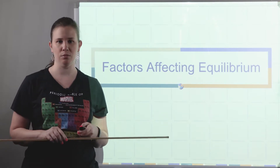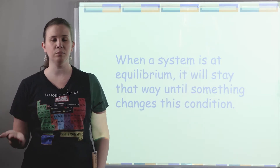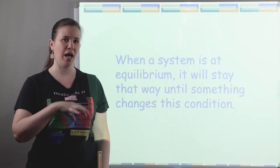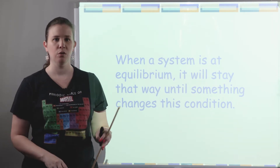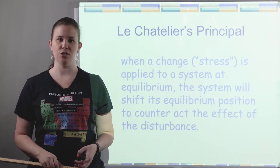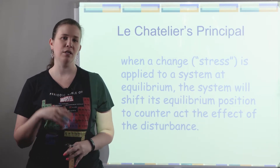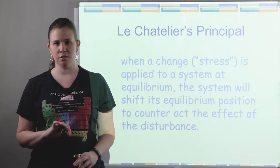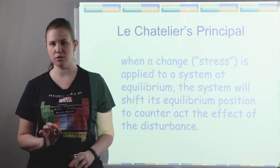Things that can shift that equilibrium. The idea is that equilibrium is stable — a system will stay at equilibrium as long as it can, but if some outside effect acts on that system, then the equilibrium can shift. We would call this changing the condition. Le Chatelier's principle basically says that the reaction is going to try to undo the effect of any stress. Whenever there's a disturbance in the system, the system will counteract that specific disturbance.